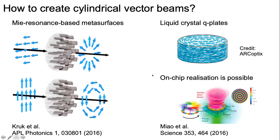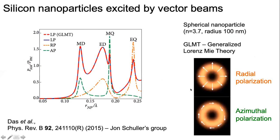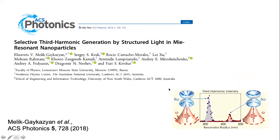These devices can potentially be used not just as bulk optical elements but also realized on-chip. We are interested in these beams because theoretical findings from John Schuller's group showed that if you consider a spherical nanoparticle illuminated by radial or azimuthal polarization, you can selectively excite either magnetic modes — in the case of azimuthal polarization — or electric modes — in the case of radial polarization.